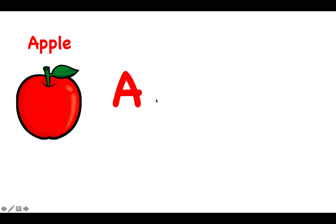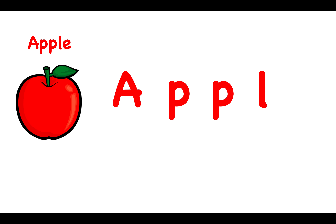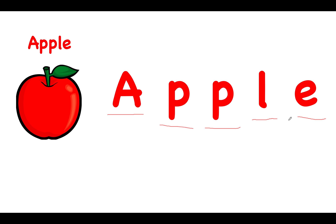Now we look at the last word which is apple. Let's do the same thing again. Let's look at the letters that make up the word. Letter A, letter P, letter P, letter L, and letter E. So let's look at the sounds of each of these letters. A-P-P-L-E. A-P-L. But the E doesn't make any sound. Let us just focus on apple. A-P-L. Can everyone say apple? A-P-L. Very good.